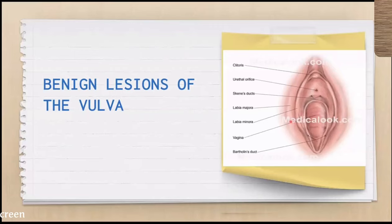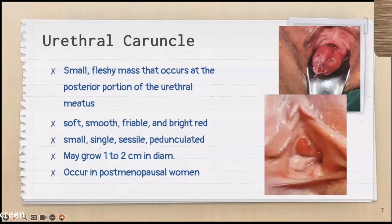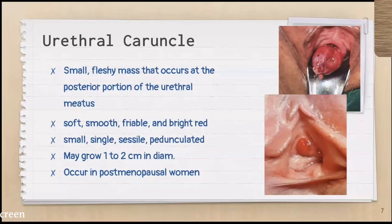If it's benign, then it's a benign lesion of the vulva. Starting with the urethral caruncle — this is a very common lesion. It's a small fleshy mass that occurs at the posterior portion of the urethral meatus. This is the urethral meatus; that's the posterior portion. It's soft, smooth, friable, and bright red in color.